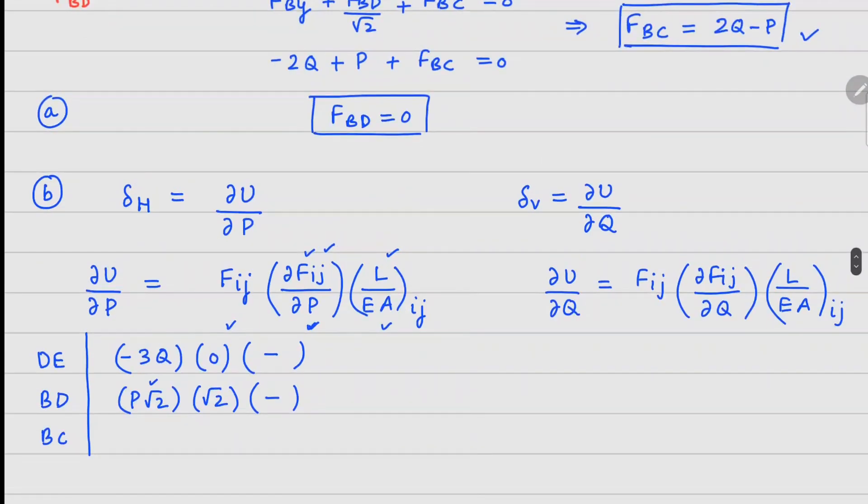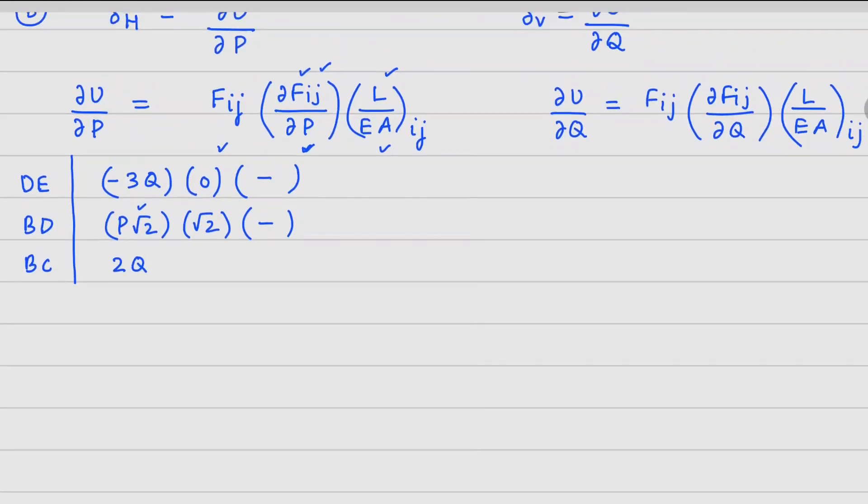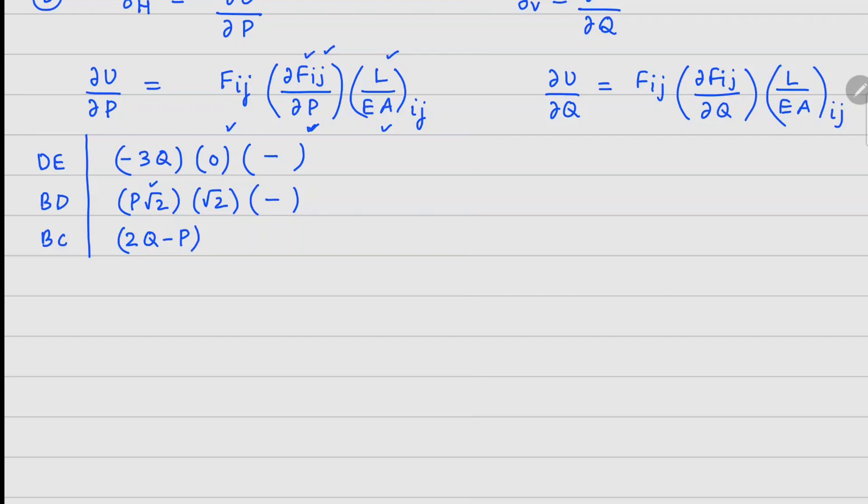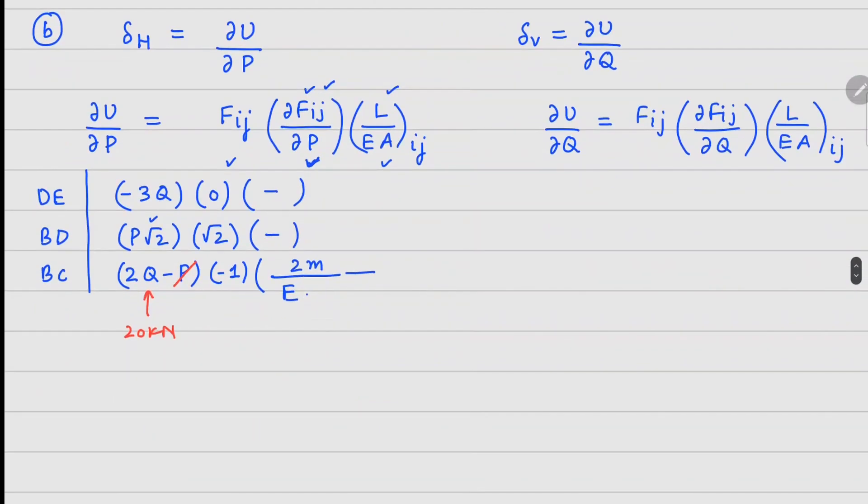For BC member, your force value is 2Q minus P. The derivative with respect to P is minus 1. When we substitute these values, the value of Q is 20 kN and P is 0. The length is 2 meters, elastic modulus E, and area of BC member is 7 cm square.